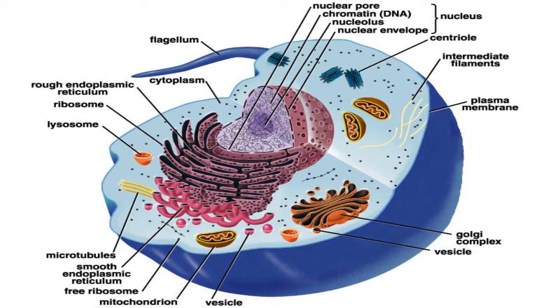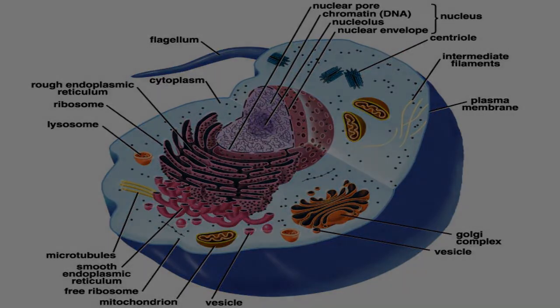Chloroplasts: the most important characteristic of plants is their ability to photosynthesize — in effect, to make their own food by converting light energy into chemical energy. This process is carried out in specialized organelles called chloroplasts.